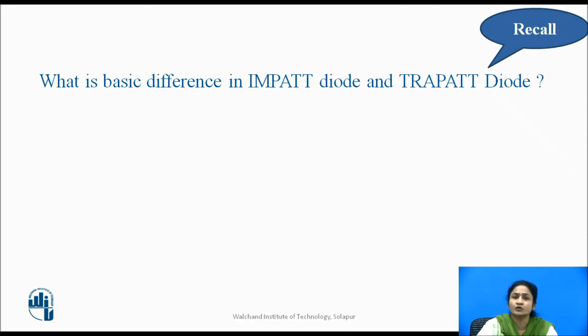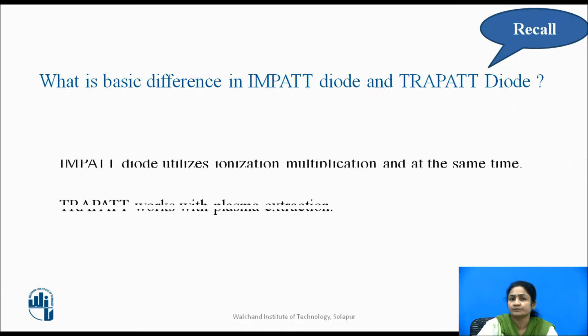Let us recall what can be the difference between the IMPATT diode and the TRAPATT diode. If they are belonging to the same family, the basic difference is that IMPATT diode utilizes ionization multiplication. At the same time, they also use avalanche multiplication, but work as plasma extraction.